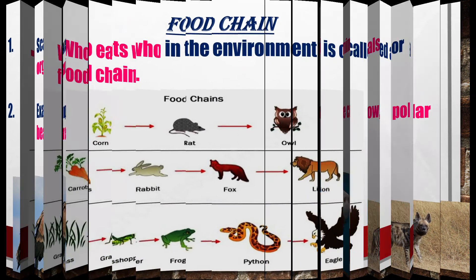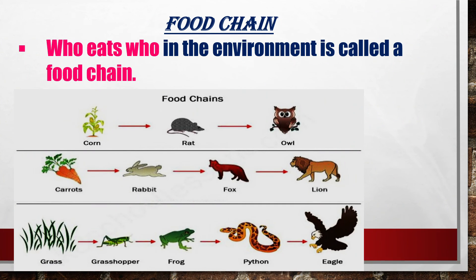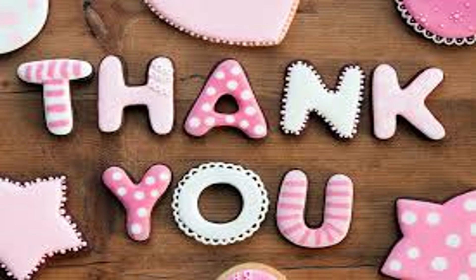What is a food chain? Who eats who in the environment is called a food chain. For example: there is some grass, a grasshopper eats it, then a frog eats the grasshopper, a python eats the frog, and finally the eagle eats the python. Thank you.